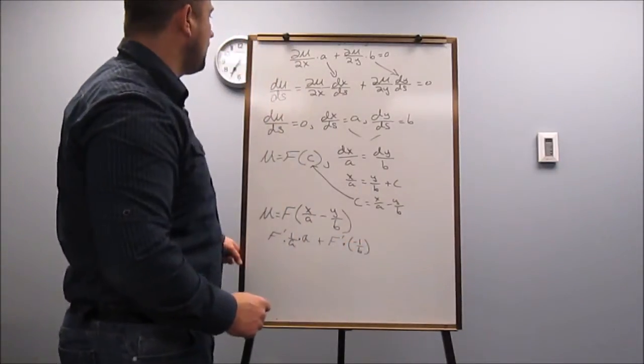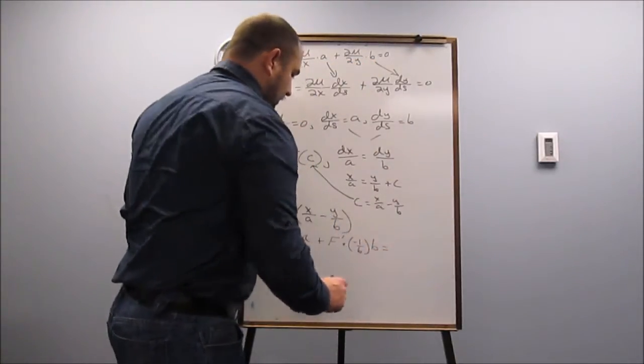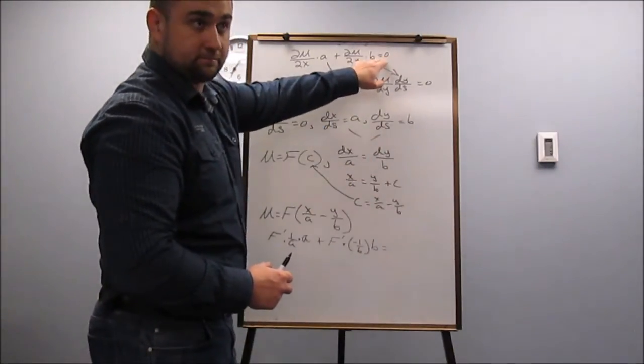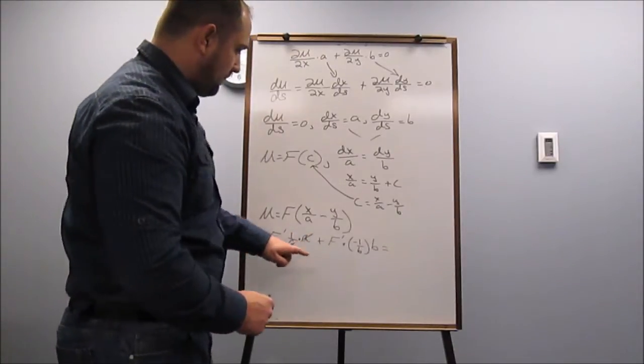and then I also have a B here, and this is hopefully going to be equal to 0. So let's check it out. A over A just gives me F prime, B over B,